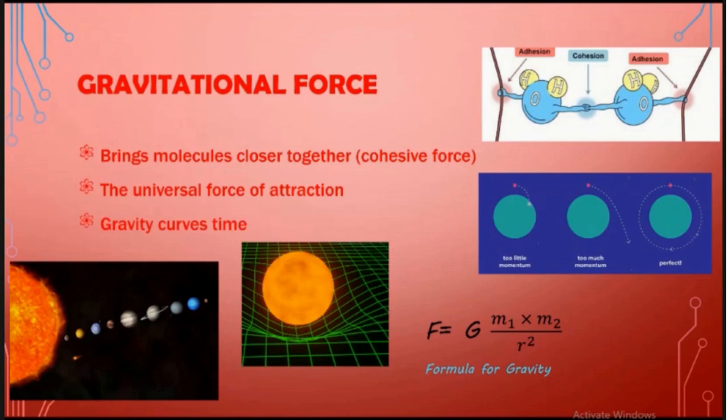Now if you look at the formula of gravity, what does it mean? It's F equals G multiplied by M1 multiplied by M2 divided by R squared. So what does the formula mean?